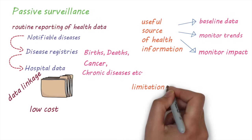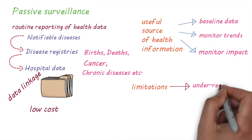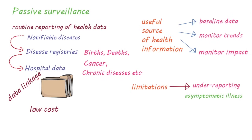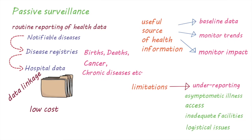There are, however, a number of limitations of passive surveillance. The main one is underreporting. Diseases can be underreported because people have mild or asymptomatic illness and don't seek medical treatment, or there's a lack of access to treatment. It could also be because laboratory facilities needed to diagnose a disease are not adequate, or that there are logistical problems with reporting disease. In fact, there can be a lot of variation in passive surveillance systems from country to country, which is a reflection of social, economic, cultural, and epidemiological factors.